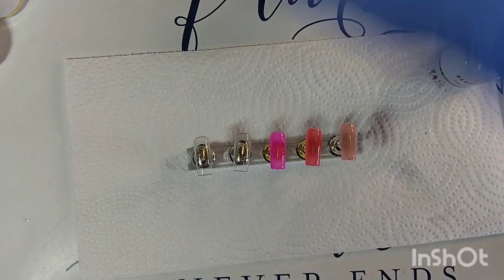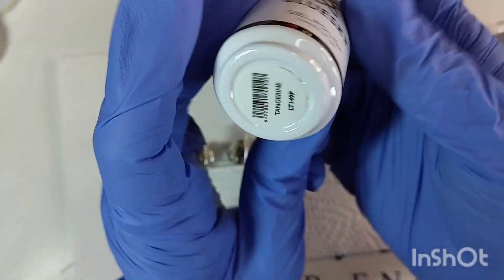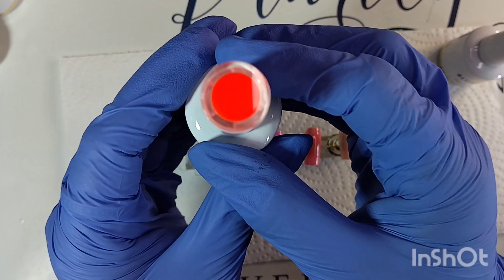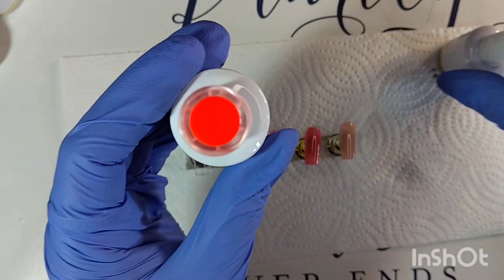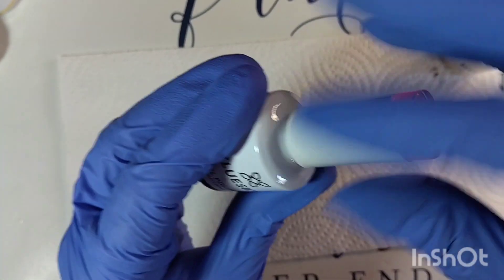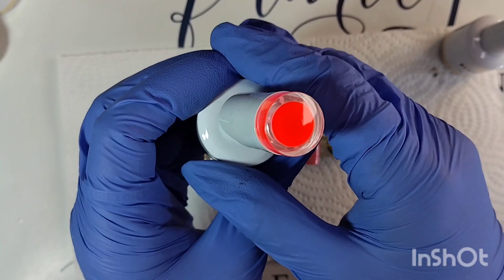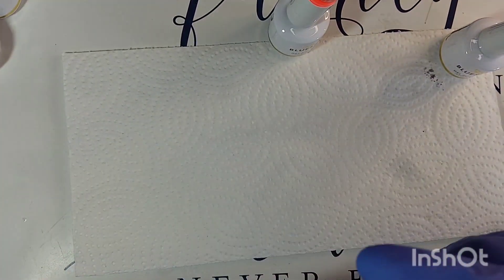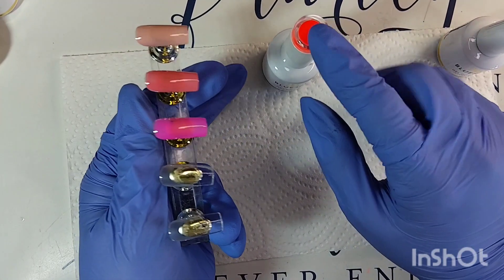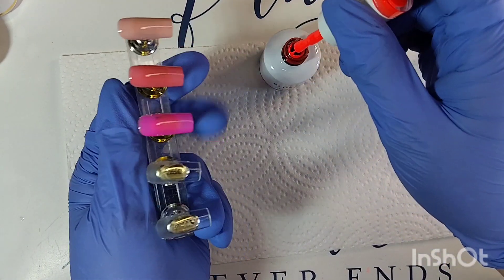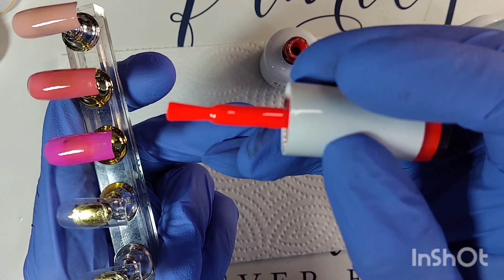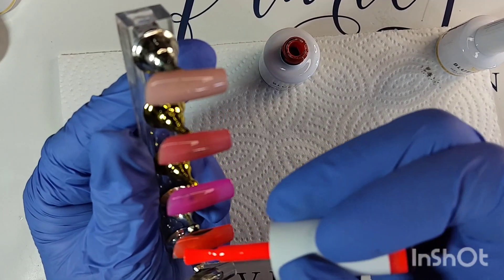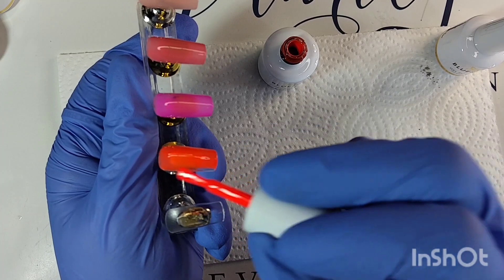Next we have Tangerine. It's this gorgeous orange, very bright. I don't have very many orange. I have the darker color oranges. I have one from Madam Glam and one from Nail Reserve, but not as bright as these ones. Very pretty. Look at that. That's gonna be beautiful for summer.